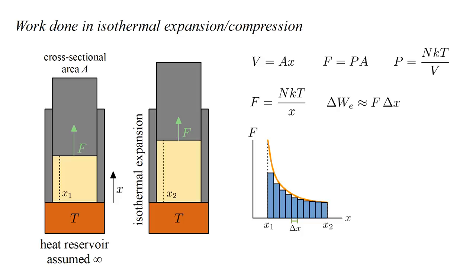The orange curve shows the force as a function of position X. For a small displacement delta X, the work done is approximately the area of one of the blue rectangles, F times delta X. We add all these areas to get the total work done in moving from X1 to X2. As delta X gets smaller, the area of the blue rectangles more closely approximates the exact work, which is the area under the orange curve.